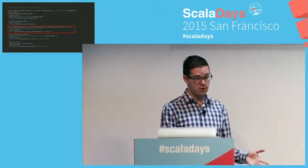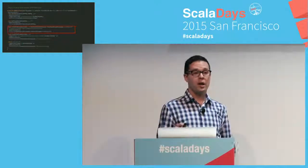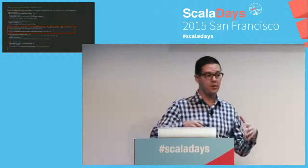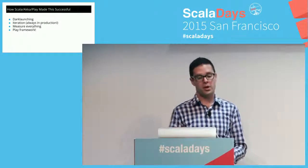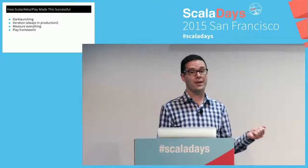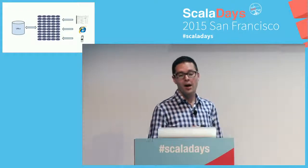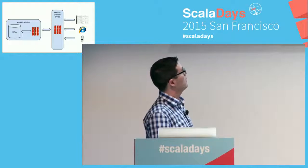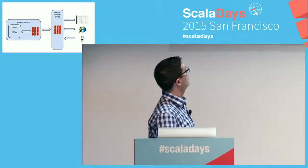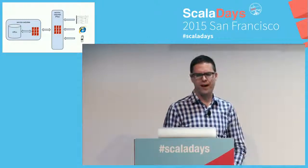But now that it's a modernized system, we can actually fix these bugs now that it's completely dropped in. How was this made successful? Dark launching, iteration, measure everything — and the Play framework itself, which is amazing and extremely easy to use. So we went from the old PHP monolith to a front-end Play framework cluster of nine nodes and a back-end cluster of nine nodes. We reduced the amount of money we were paying Amazon by something like $25,000 a year.